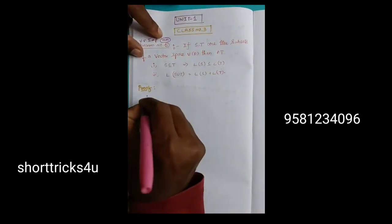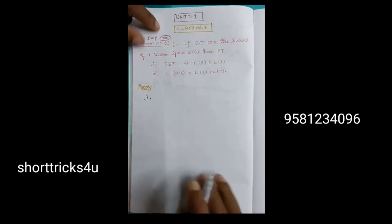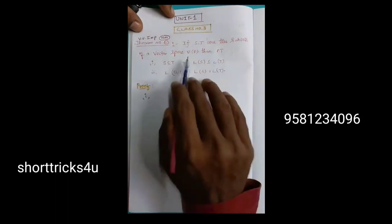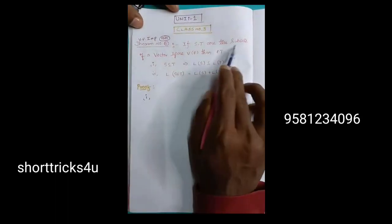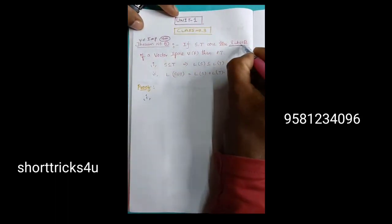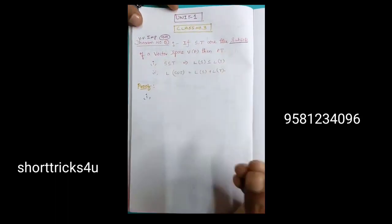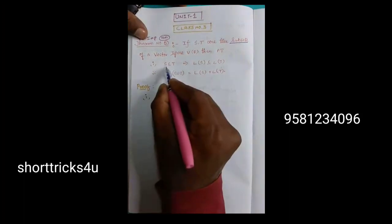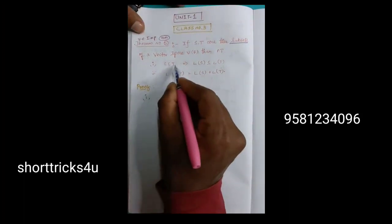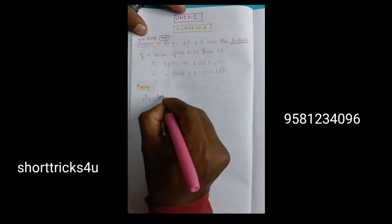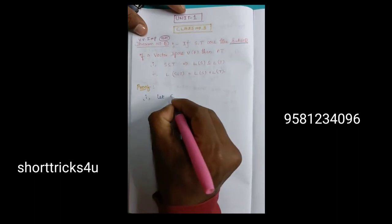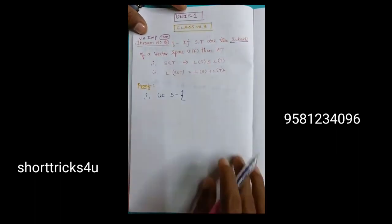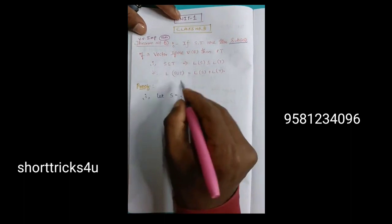First proof. I will explain you the first part. If you have a vector space, you can see a subset of a vector space — just subsets, not subspace. It is very simple. S contains T.